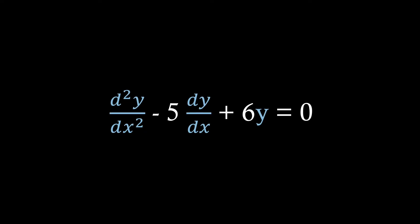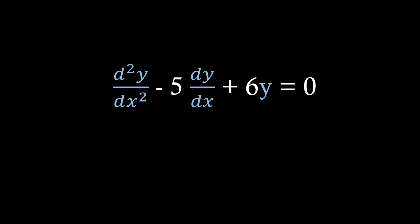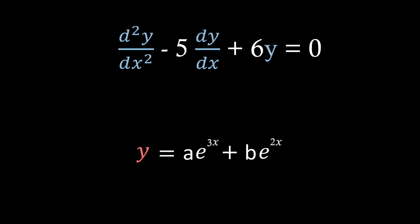So in the last episode, we solved this exact equation, which is a second order linear differential equation in the homogeneous form. We found the general solution to be y equals a times e to the 3x plus b times e to the 2x, where a and b are constants.